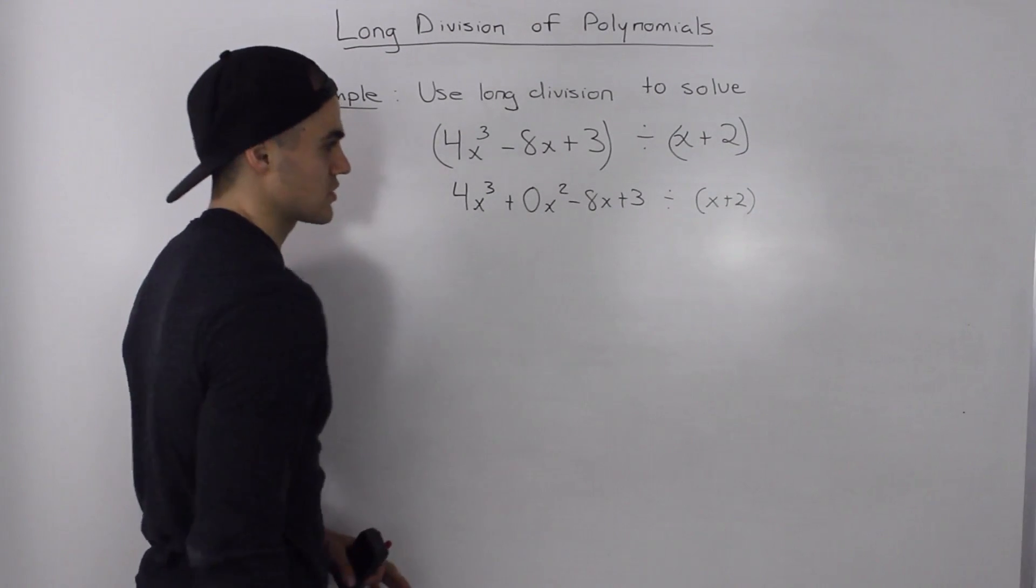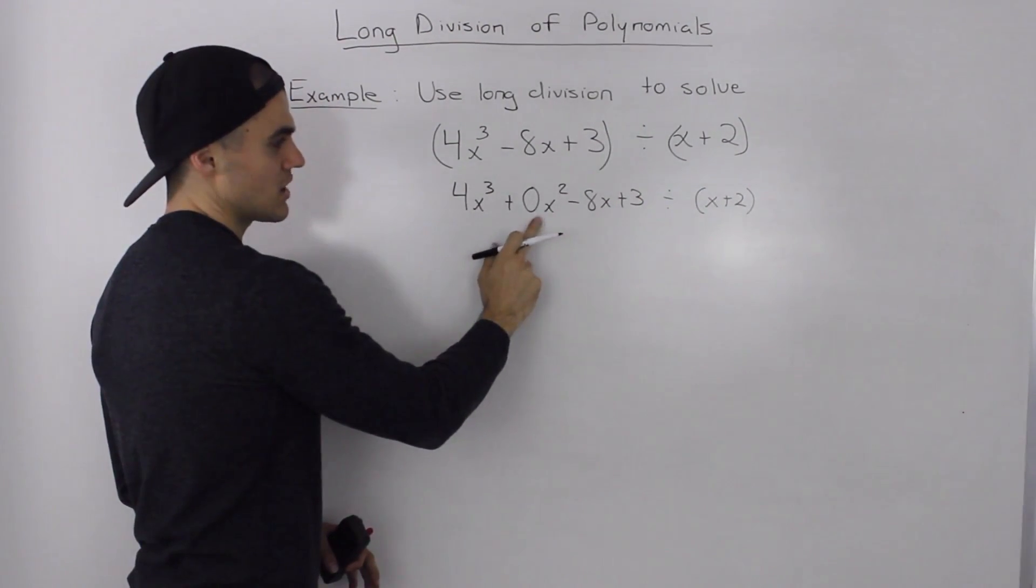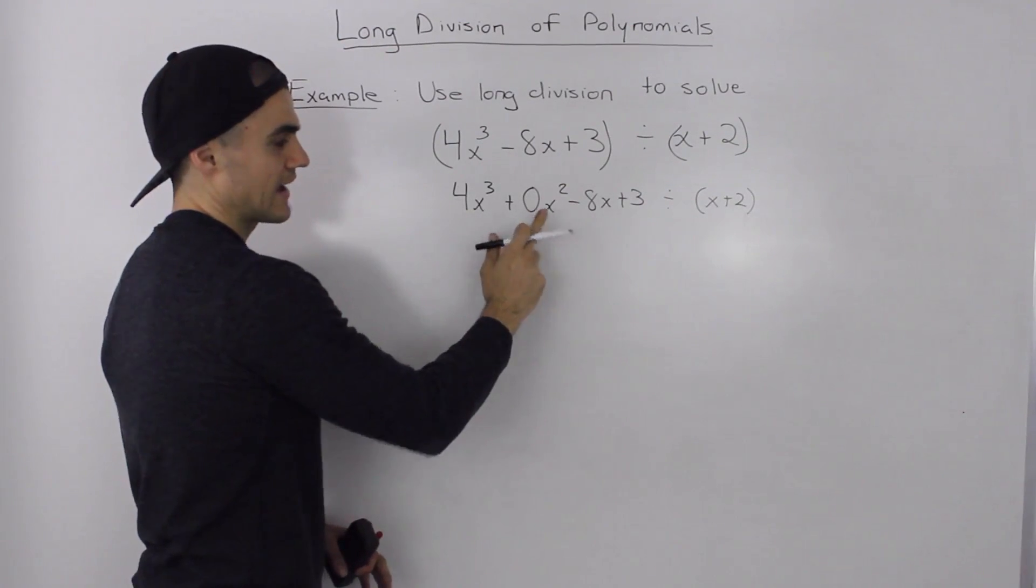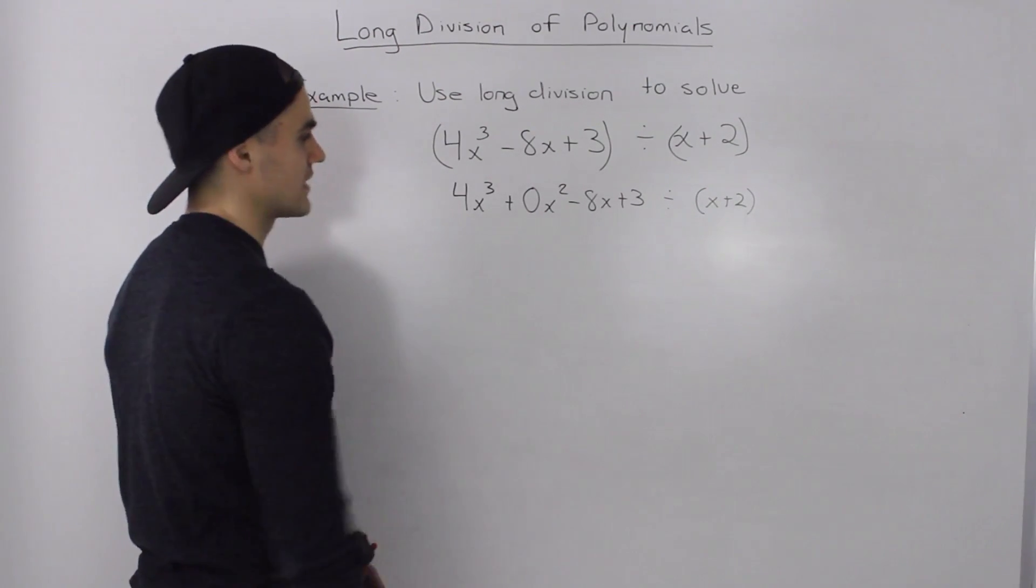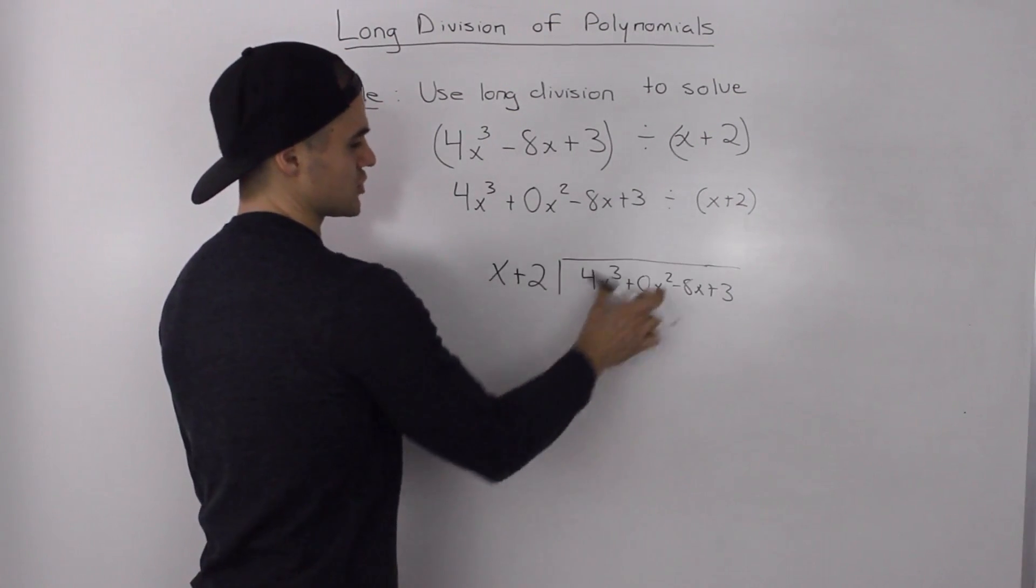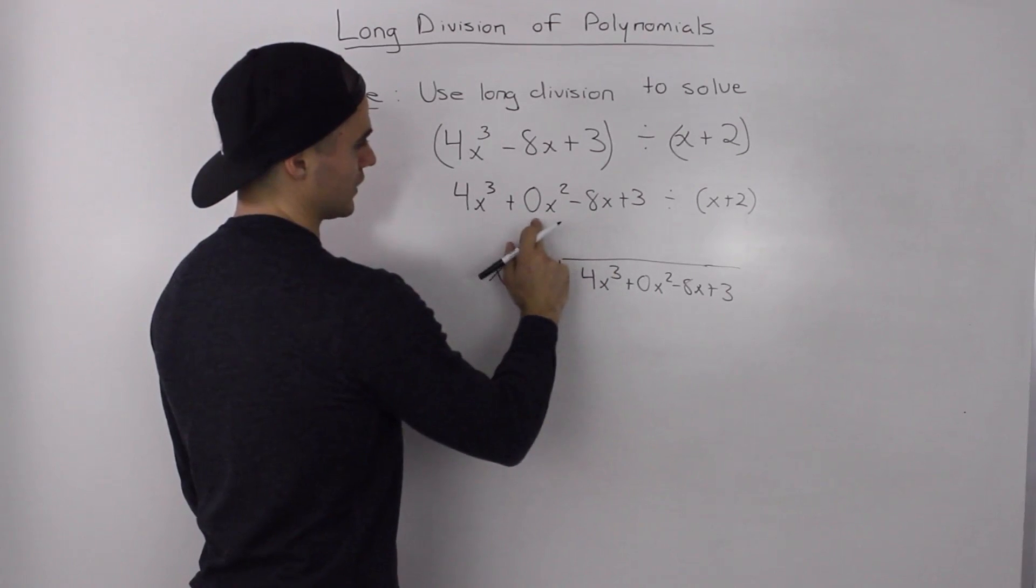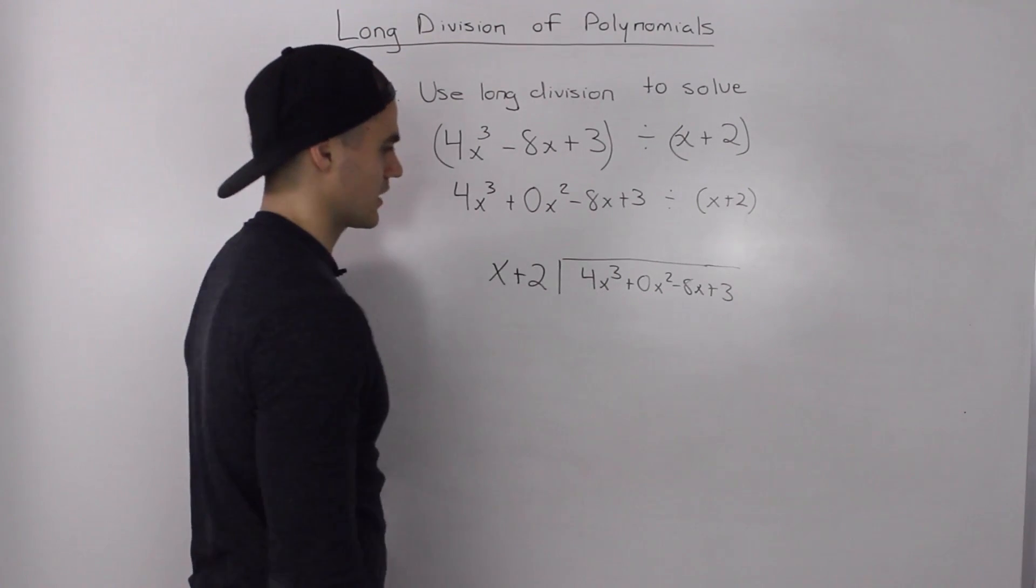In this case, it was an x squared. So, I just took this division and I rewrote it here and I'm using our new dividend with our 0x squared as well.